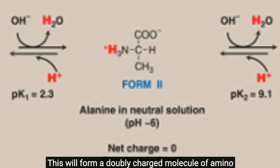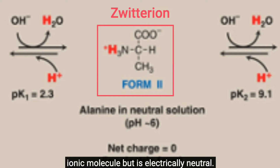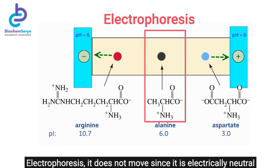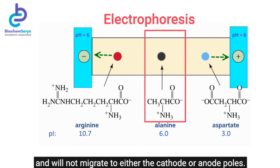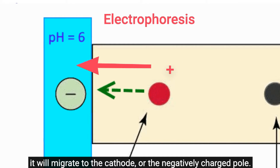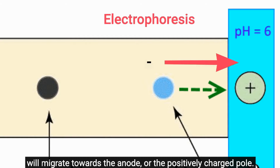This forms a doubly charged molecule of amino acid containing both positive and negative charges, called a zwitterion — a doubly charged ionic molecule that is electrically neutral. If subjected to an electrical field as in electrophoresis, it does not move since it is electrically neutral. Once the amino acid is positively charged or cationic, it migrates to the cathode. Conversely, an anionic amino acid migrates toward the anode.